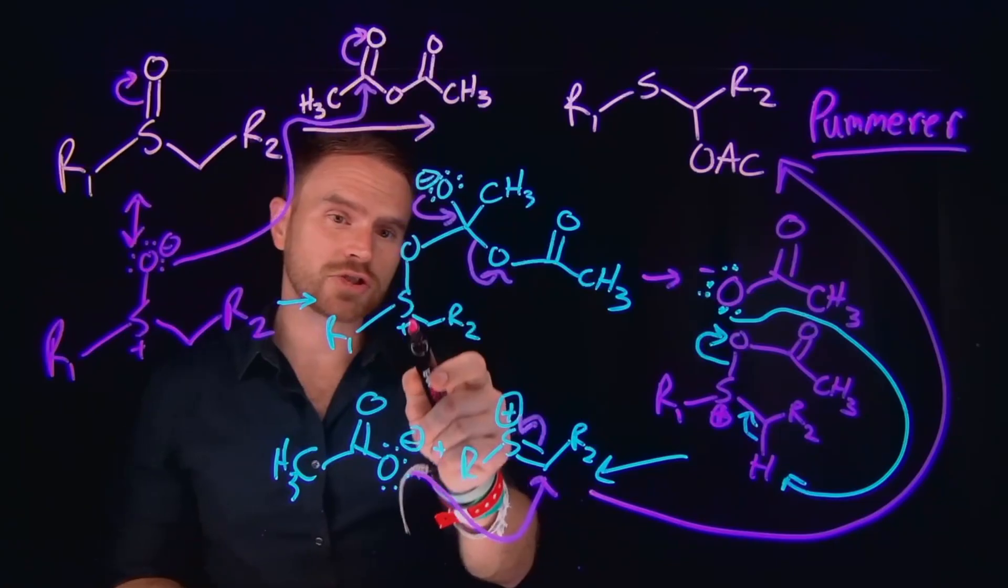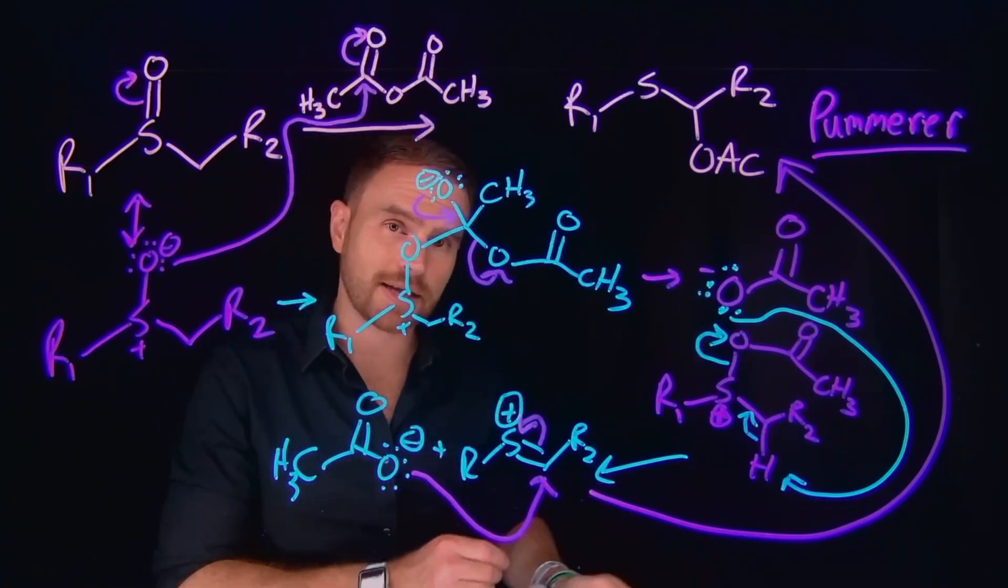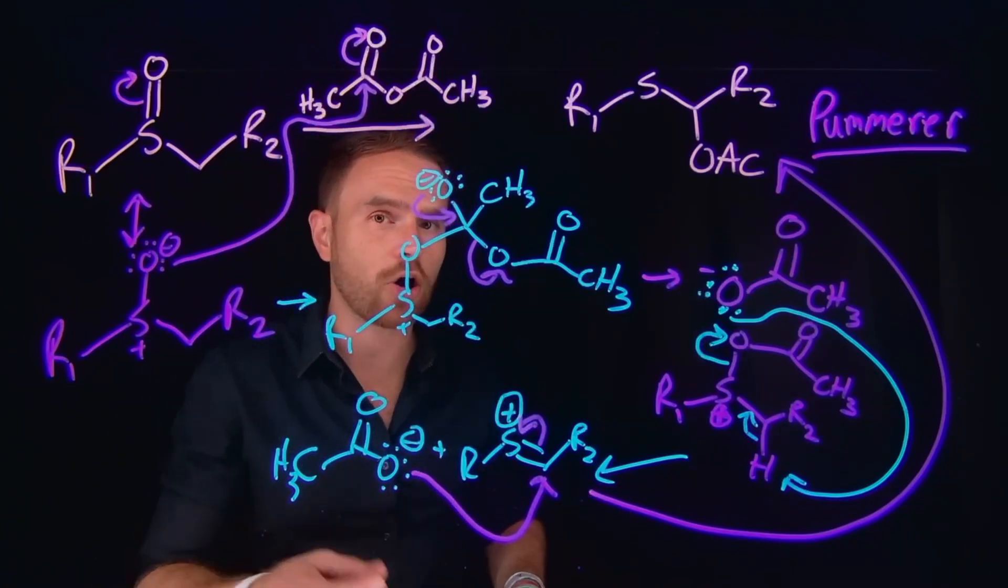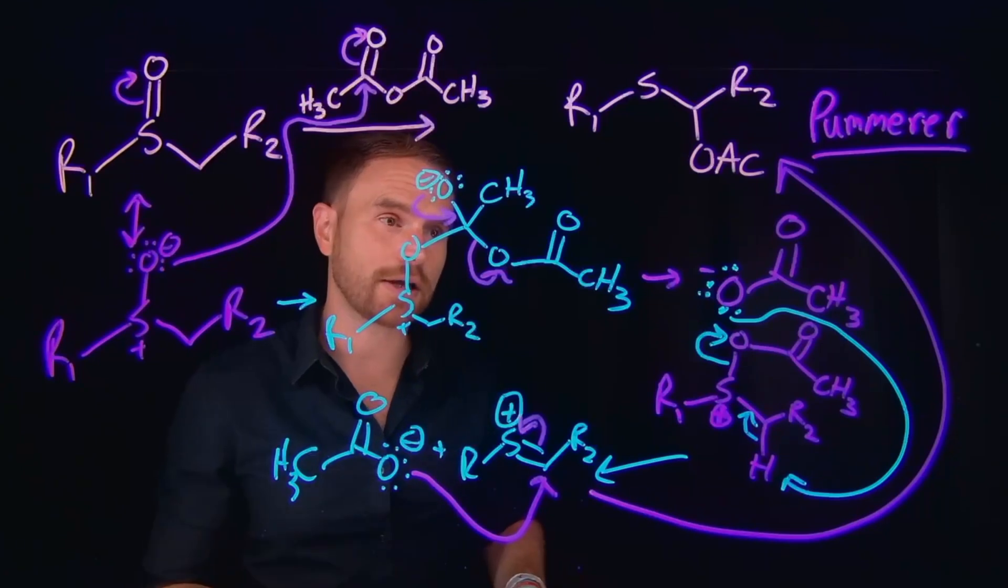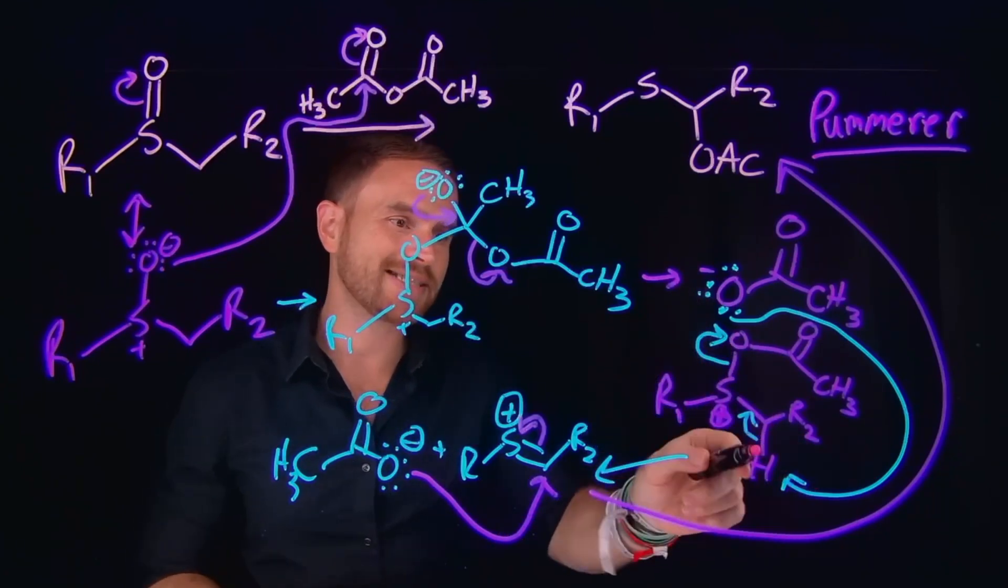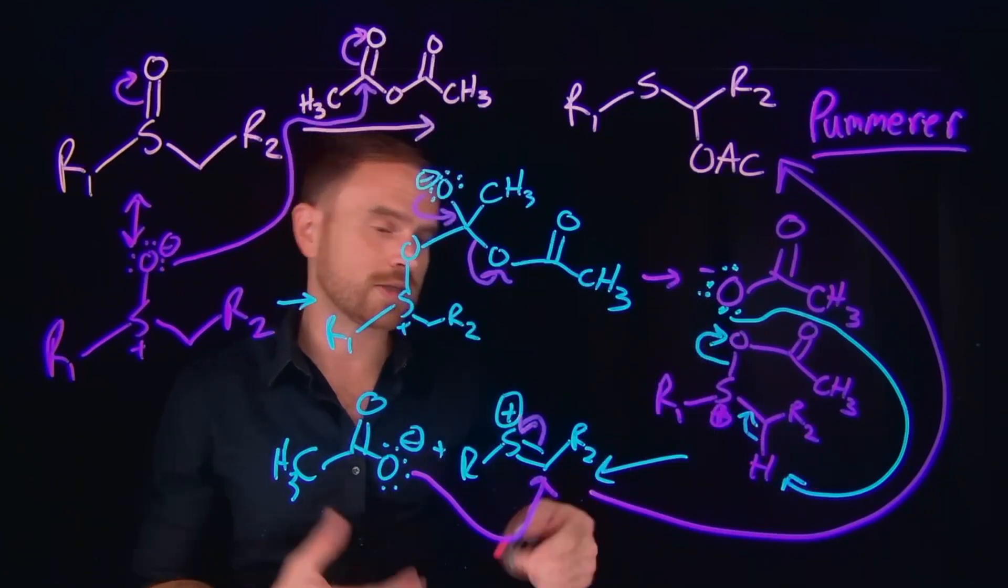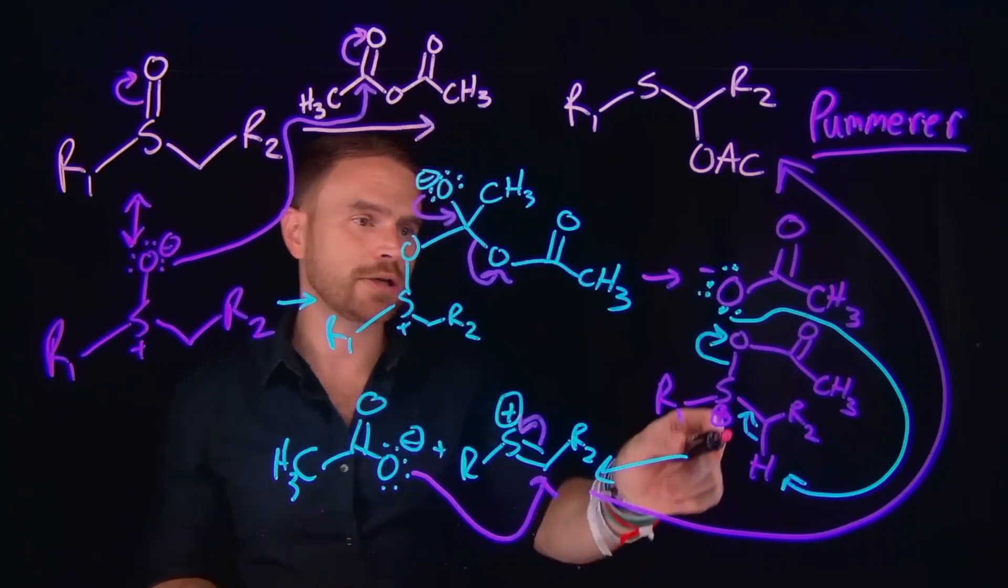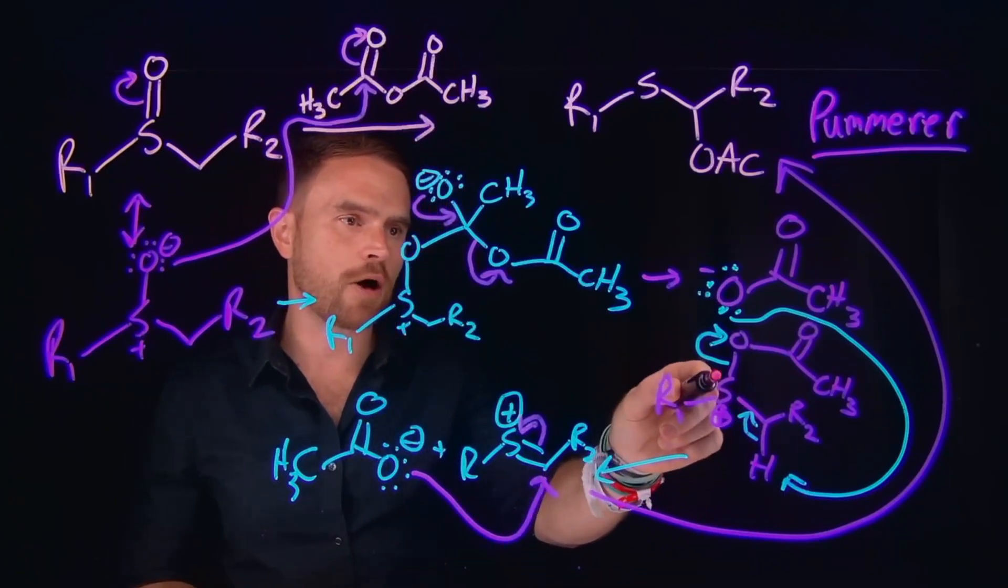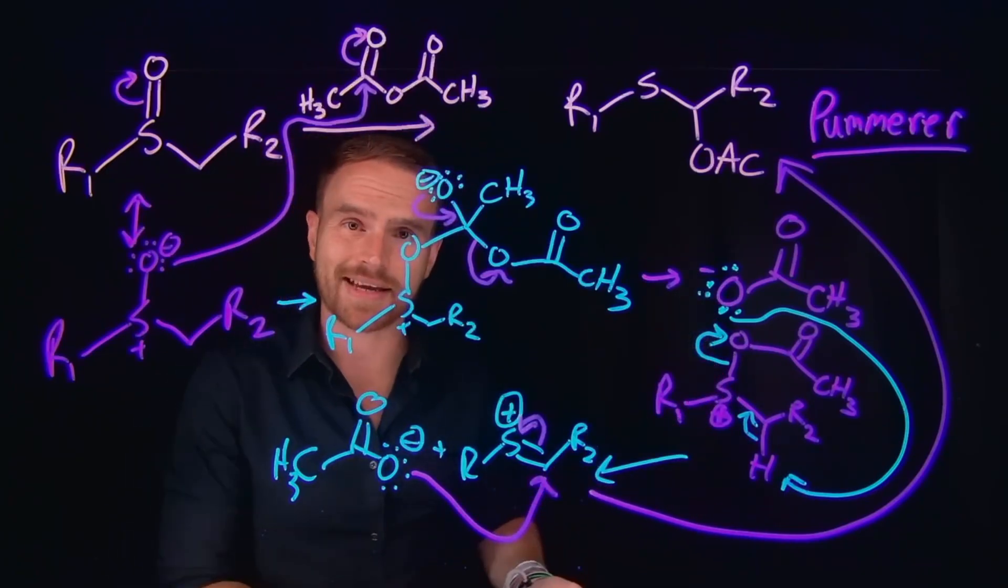From here, since our sulfur is positively charged, the alpha carbon that's adjacent to it is going to generate a carbon to hydrogen bond that's going to be acidic enough to be deprotonated by acetate, which will allow us to do what's effectively an elimination reaction where you're forming a new carbon to sulfur bond and also kicking off acetate as a leaving group again.